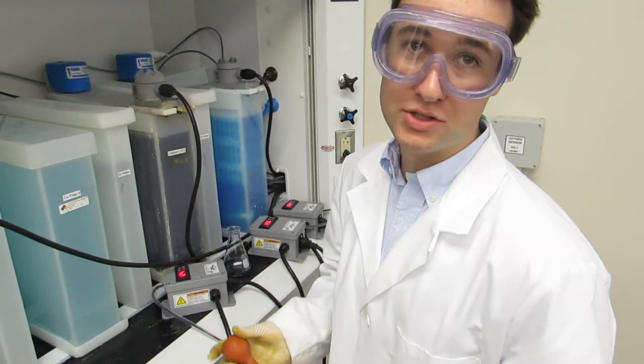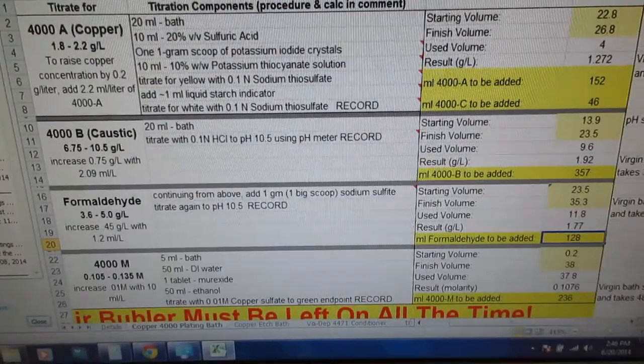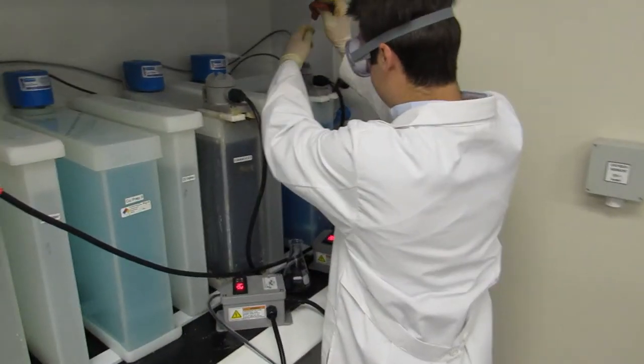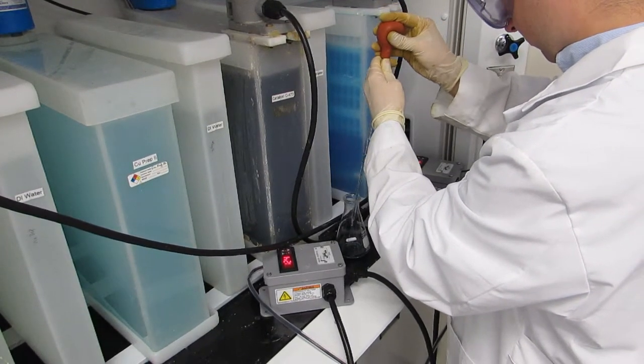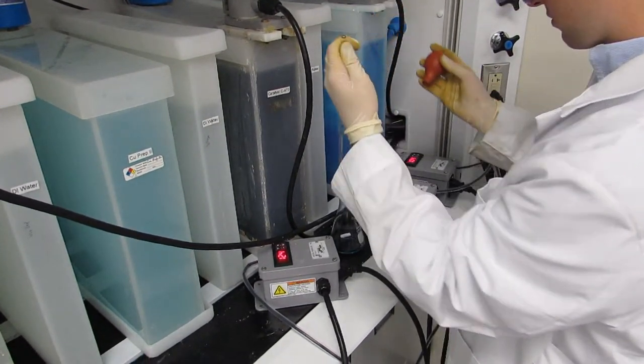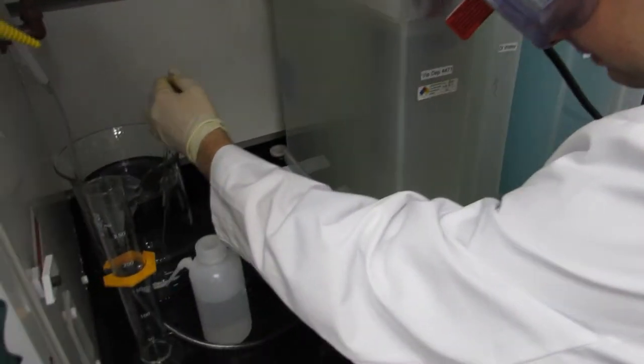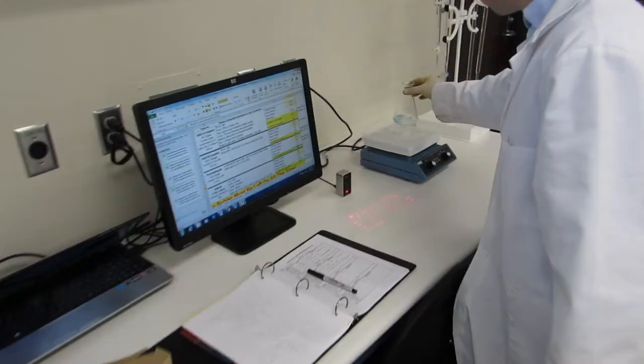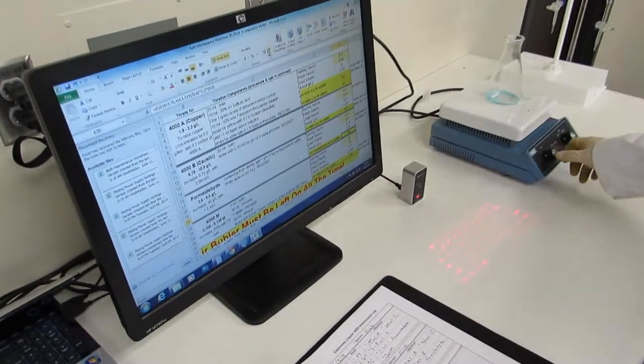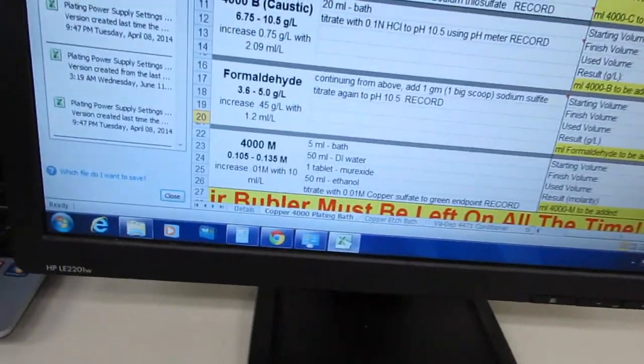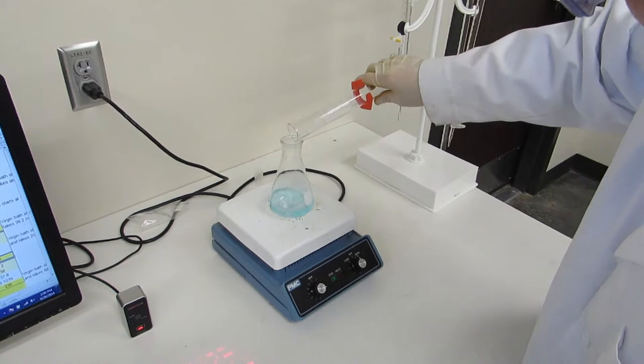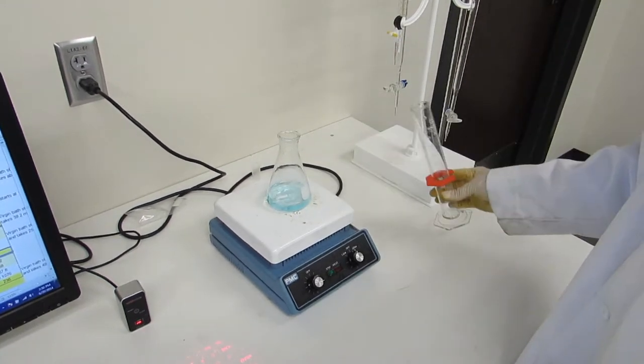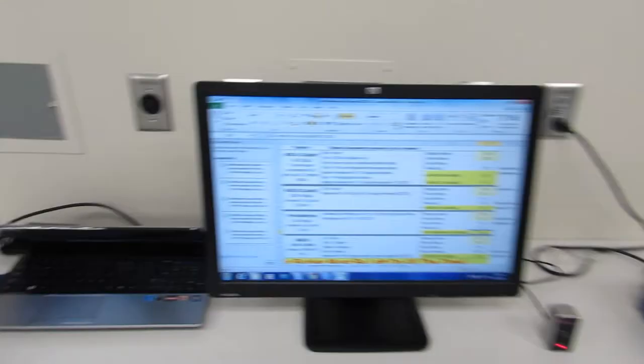Now for the last titration step, we need a 5 milliliter bath to start. Now we need 50 milliliters of deionized water, and then we have to add one tablet of mirexide.